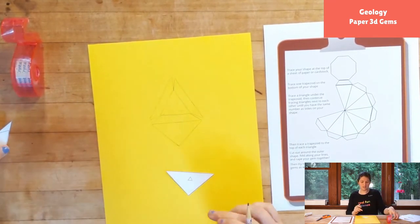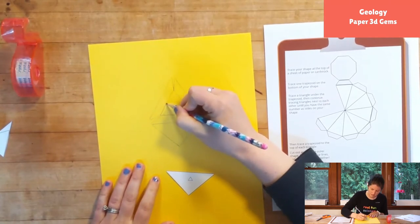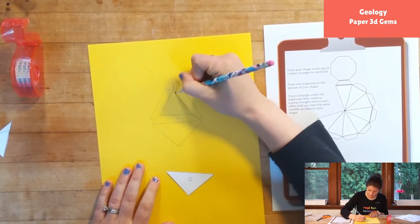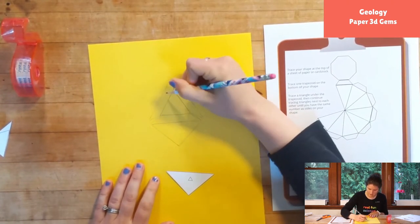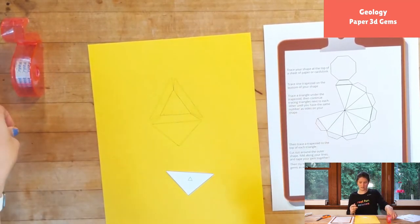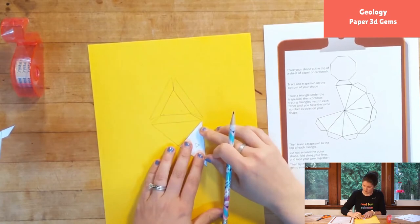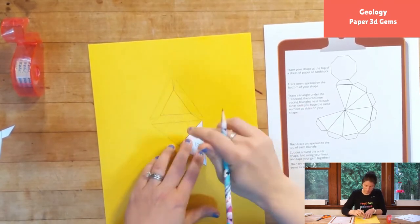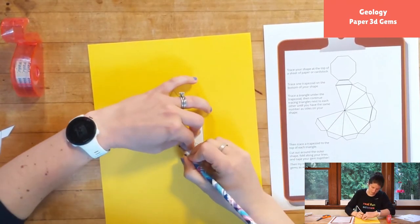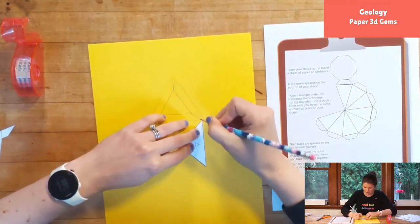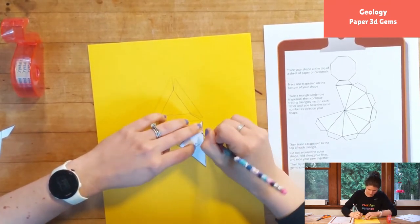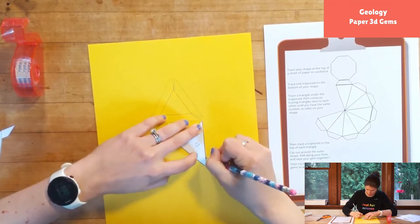So another way we could do this is actually we could cut straight around this part of our triangle instead of doing these two, and we can put these triangles like this, which is what I did over here. That makes it so that this part all folds at the bottom and you don't have to tape it together as much. You decide what you would like to do. It will all still work the same for you.